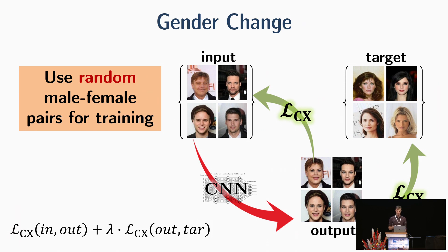Our third application is gender change in the field of domain transfer. Here we train the CNN without cycle and without GAN. At each iteration, we use a random male and female pair for training. Since our loss function is not spatially bound, it can match any two images of faces. Again, we use additional loss term between the input and the output to control the identity.